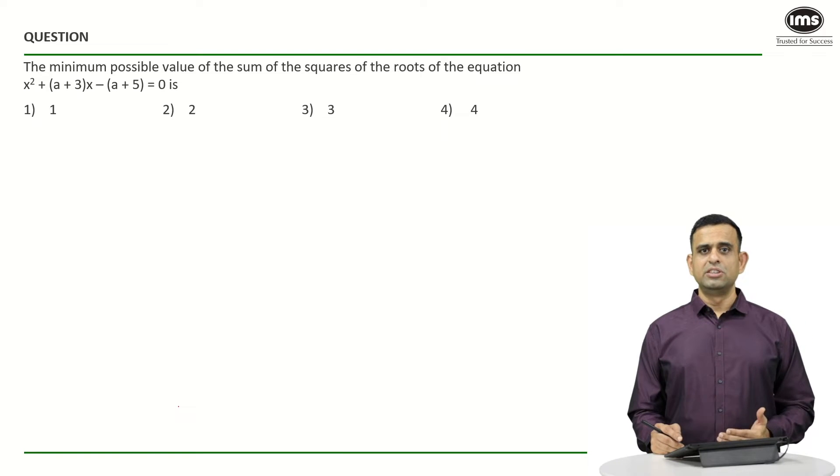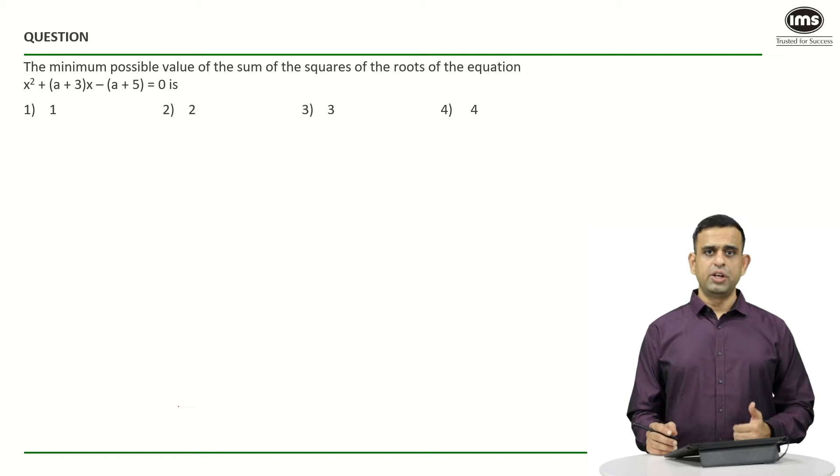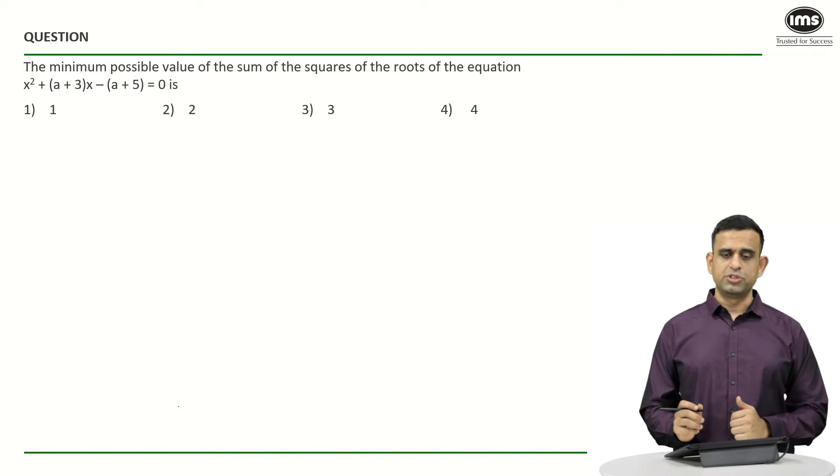So in this question, the objective is to find out the least value of the sum of the squares of the roots of the equation x² + (a+3)x - (a+5) = 0.